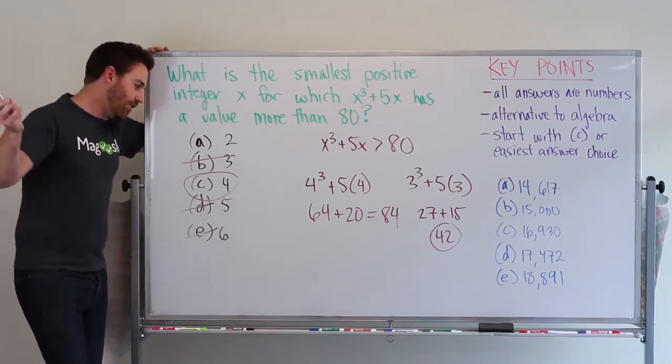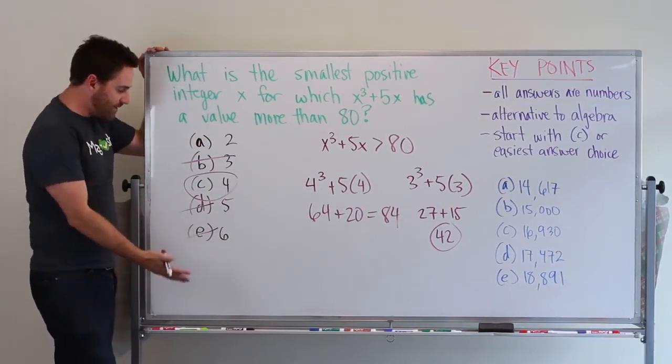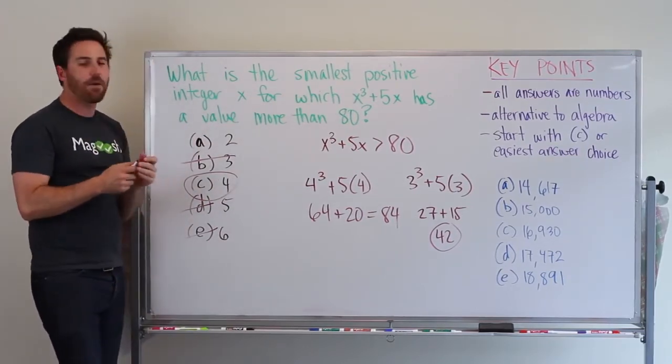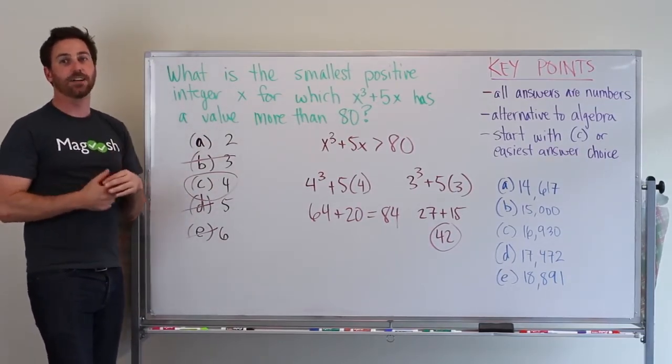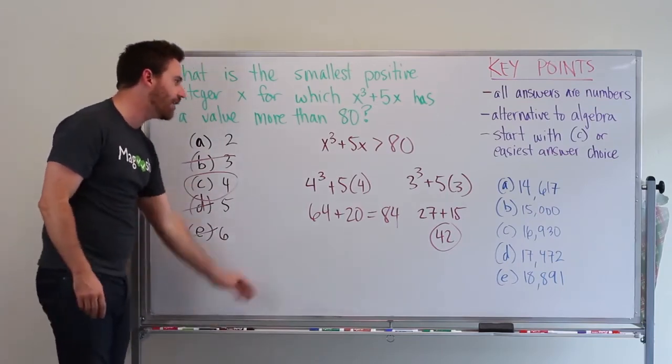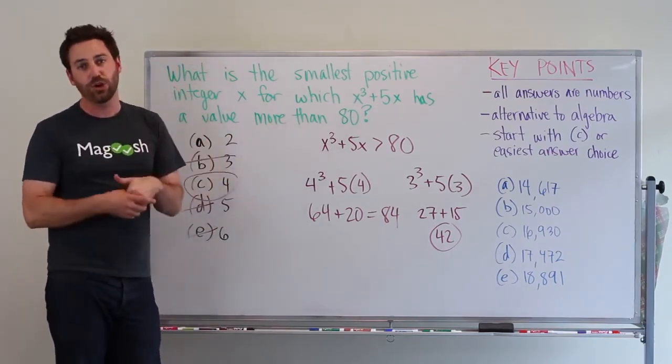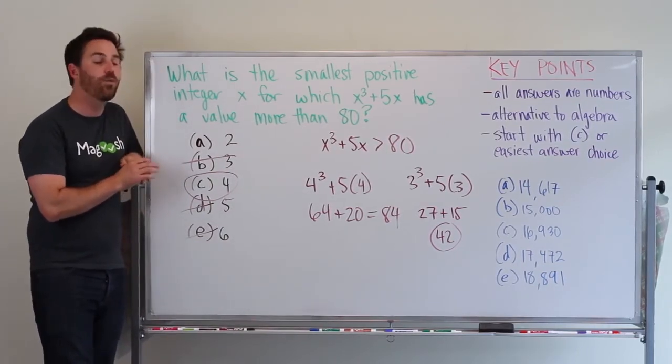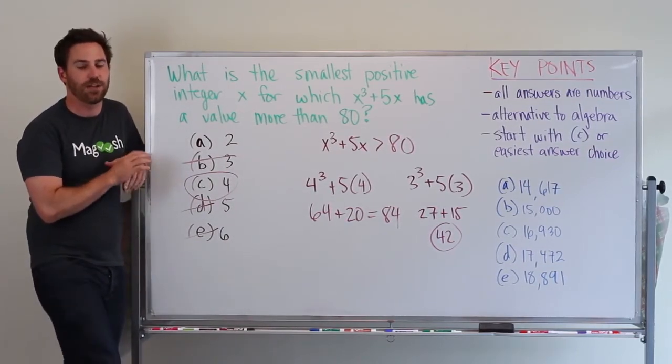That's it. So remember, back solving: if you have numbers in the answer choices and algebra in front of you, think about plugging in numbers to arrive at an answer instead of churning through an algebra equation. This can be a really efficient way to get through questions on the GMAT.